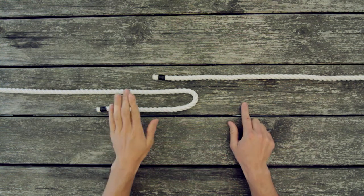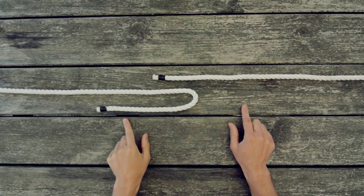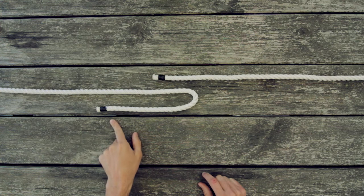Okay, so for the sheet bend we start with two lengths of rope and the one on the left has a bite in it with the tail end facing down.